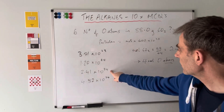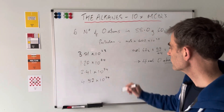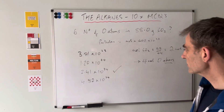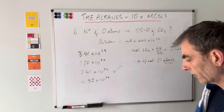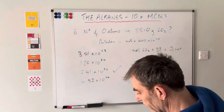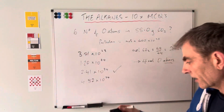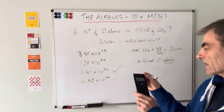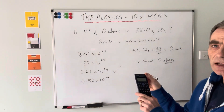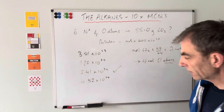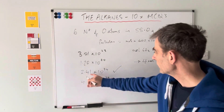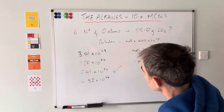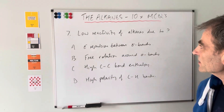We multiply four by Avogadro's number to get 2.41 × 10²⁴ oxygen atoms (more precisely, 2.408 × 10²⁴, which rounds to that value to three significant figures).